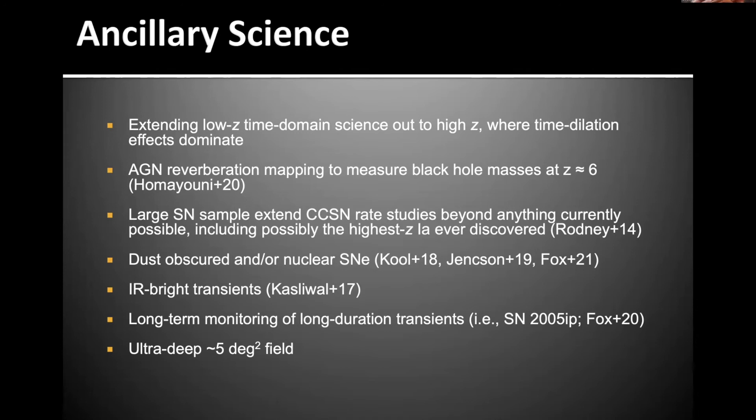And then more nearby, we've heard a few talks about various subjects in the IR, dust obscured and nuclear supernovae, IR bright transients that have been discovered by SPRITES and intermediate luminous infrared transients by SPIRITS, long-term monitoring of long-duration transients like CSM interaction, these 1A CSMs. One example is this 05IP that's still bright after nearly 20 years. And for all the non-transient people that might be on this call, there's stuff for you too.